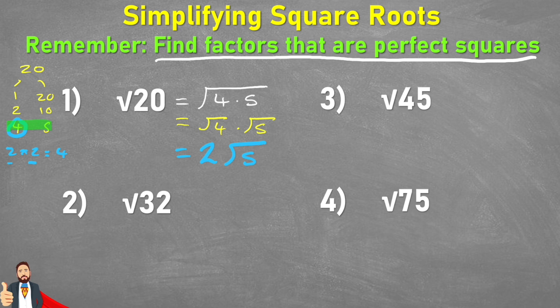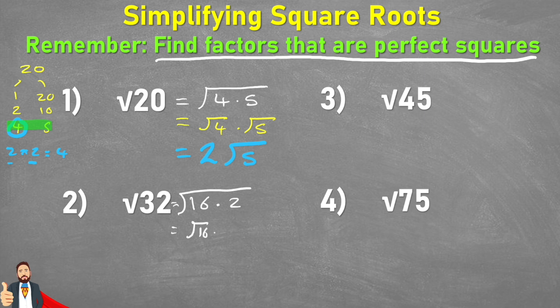Question 2 can be done in two ways. Let's look at the first one. One set of factors that equal 32 which include a perfect square could be 16 and 2. So the square root of 16 times 2 is equivalent to the square root of 32. I can split this up and say the square root of 16 multiplied by the square root of 2. We know the square root of 16 is 4 because 4 times 4 equals 16. Therefore, 4 multiplied by the square root of 2 is our simplified square root.